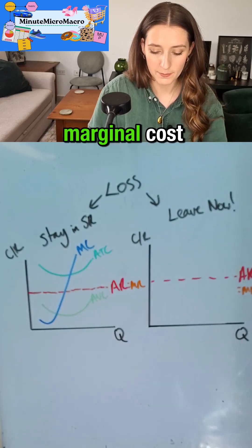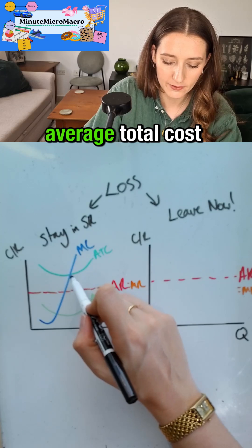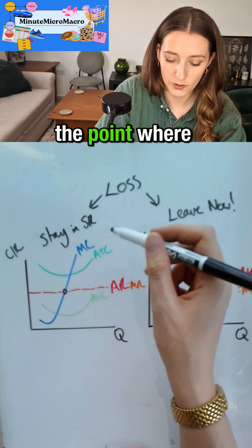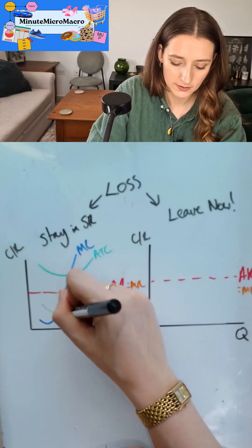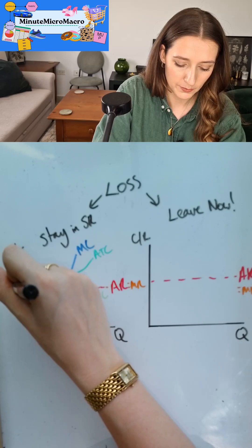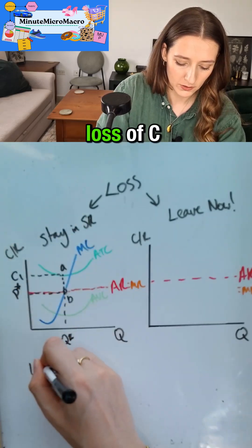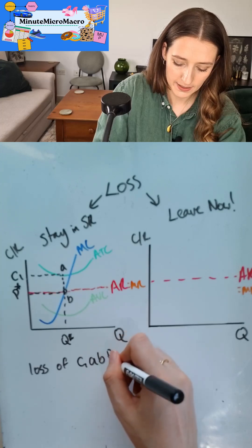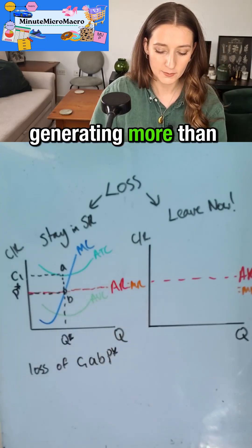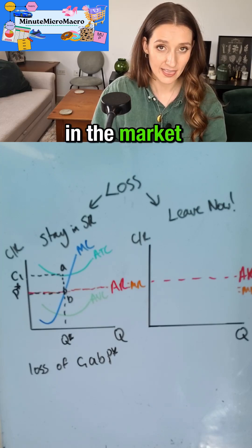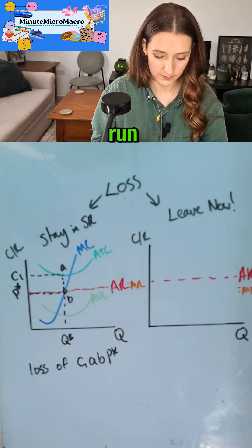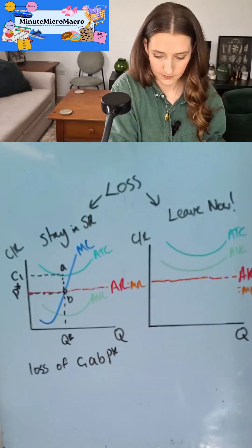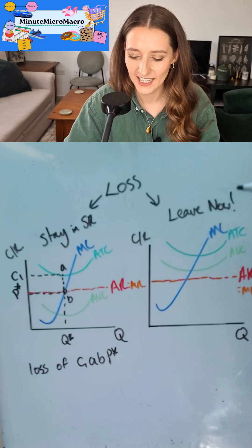My marginal cost is cutting through my average total cost at the minimum point. My profit maximizing condition is to take the point where MC equals MR, set that as Q star, read across to my P star. I'm making a loss of C1 A B P star, but because I'm generating more than just my variable cost, I should stay in the market in the short run.